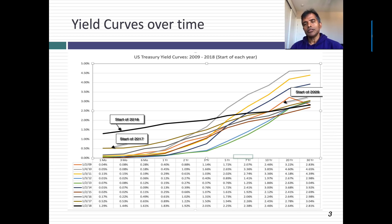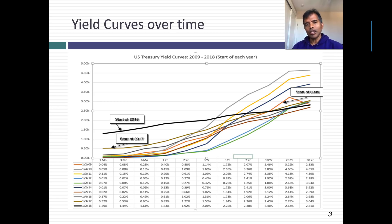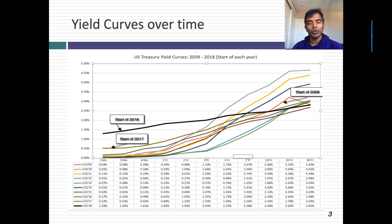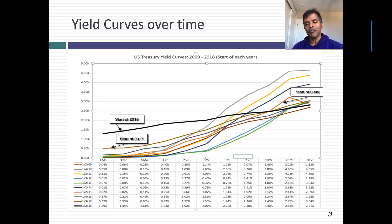To understand this reasoning, let's start by looking at yield curves over time. In this graph, I looked at the yield curve at the start of every year, starting in 2009, going through 2018. These are the 10 years after the crisis. The yield curve right after the crisis was steeply upward sloping and remained upward sloping for the bulk of this period. But especially in the last two years, it's flattened out, and by 2018 it's much flatter than at any time in the last decade.